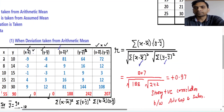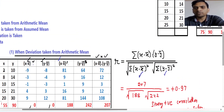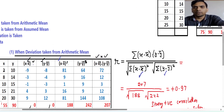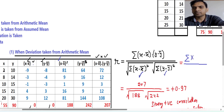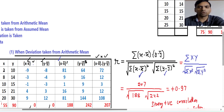Sometimes you will see this formula in the form of capital X and capital Y. You may write x minus x̄ as capital X, and y minus ȳ as capital Y. In the denominator you can write this as summation of X² and summation of Y². So you can also see the formula in this form.